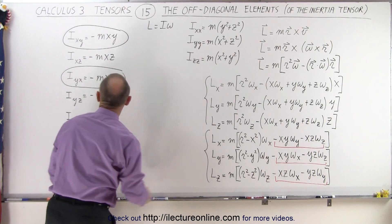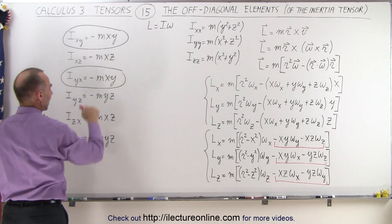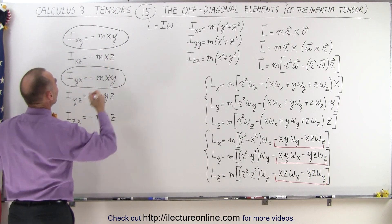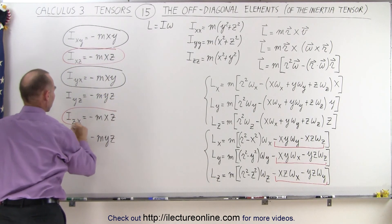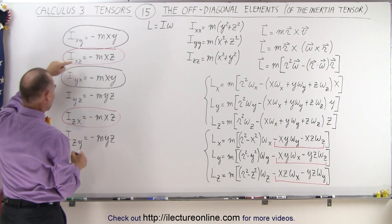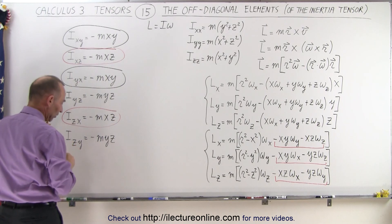And then using a different color, here we have a minus mxz and a minus mxz. That means that these two terms are the same. So these two terms right here. So you can see that the ixz is the same as the izx. There's the symmetry.